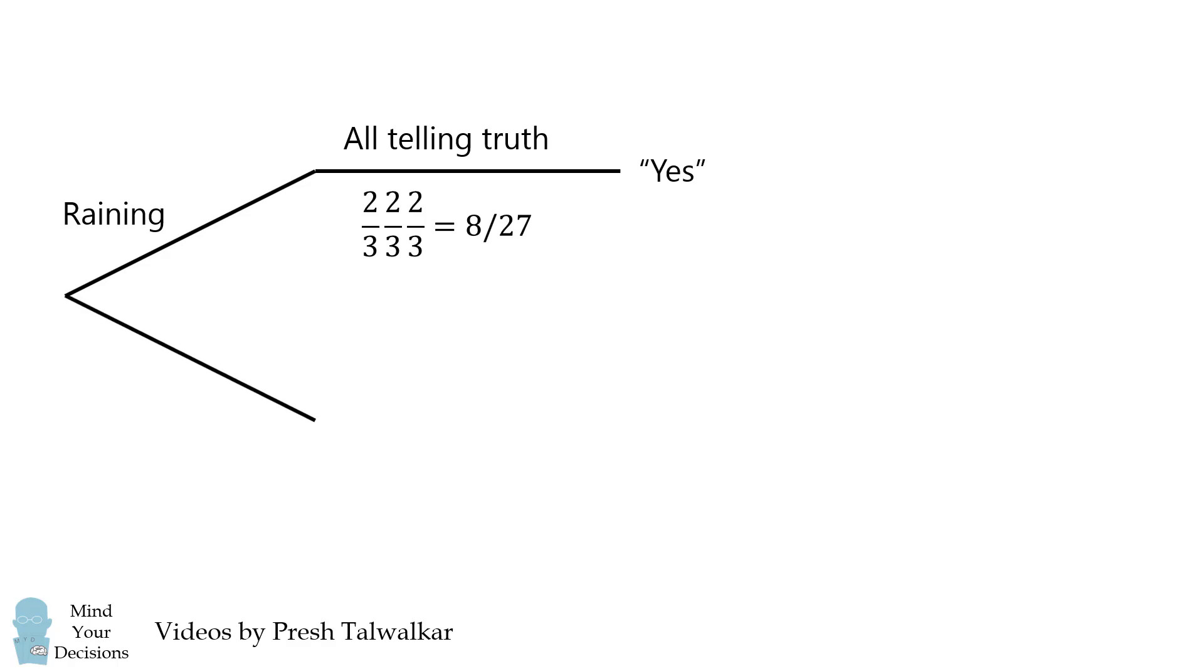The other branch will be if it's not raining in Seattle. Now if all three friends are lying, then they will also all say yes. Each friend lies with a probability of 1/3, so we end up with the probability of 1/27 that all three are lying.